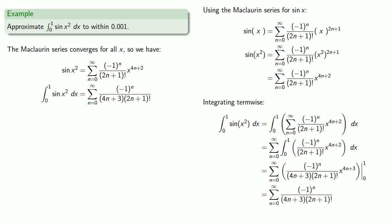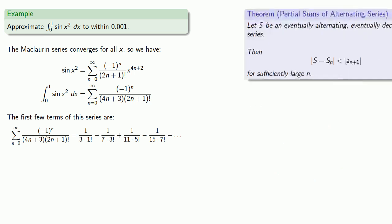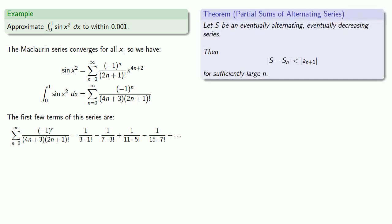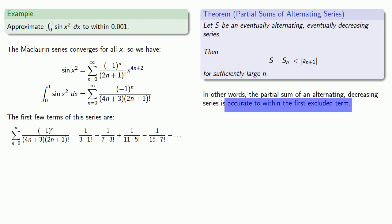Now if we write down the first few terms of the series, we see that it is alternating and eventually decreasing. So we can use the remainder theorem for alternating series. So remember the remainder theorem for an alternating series is essentially that our series is accurate to within the first excluded term.